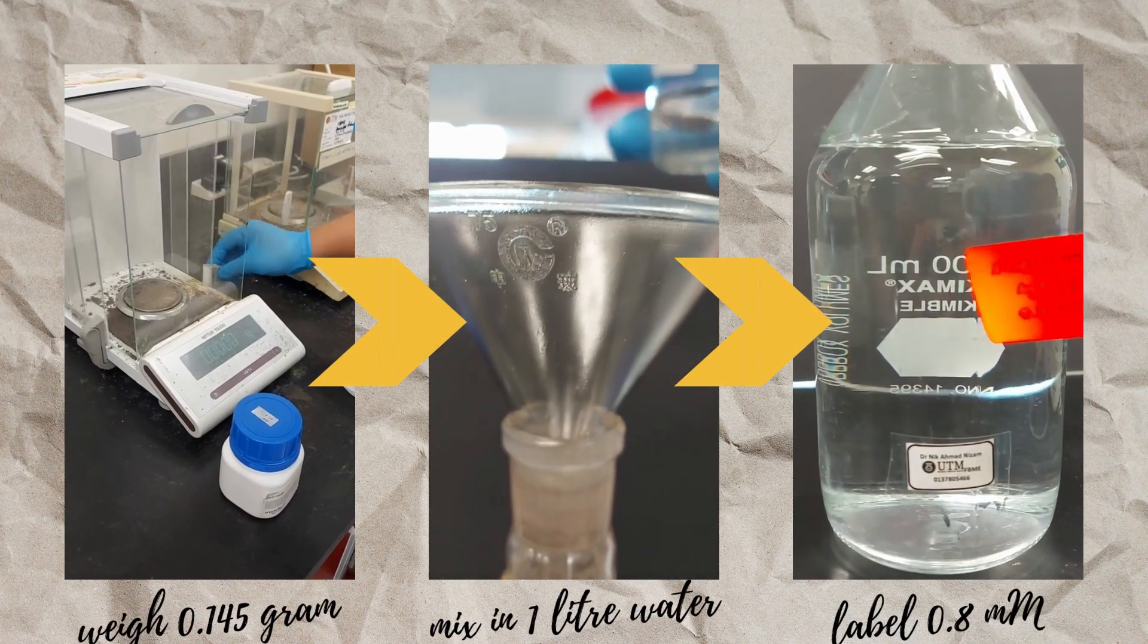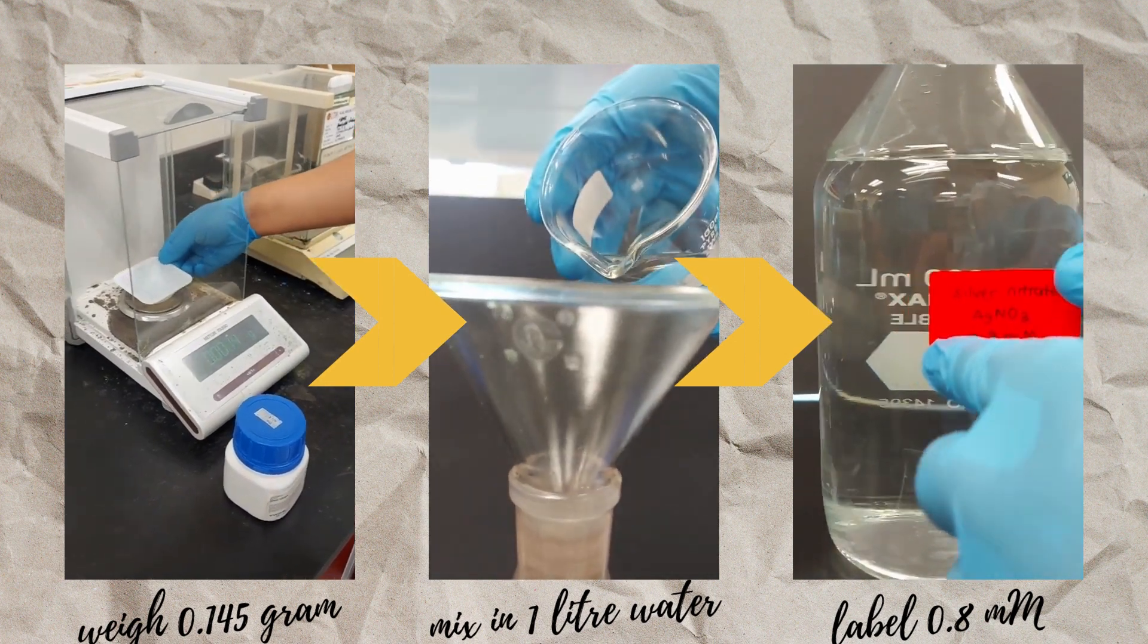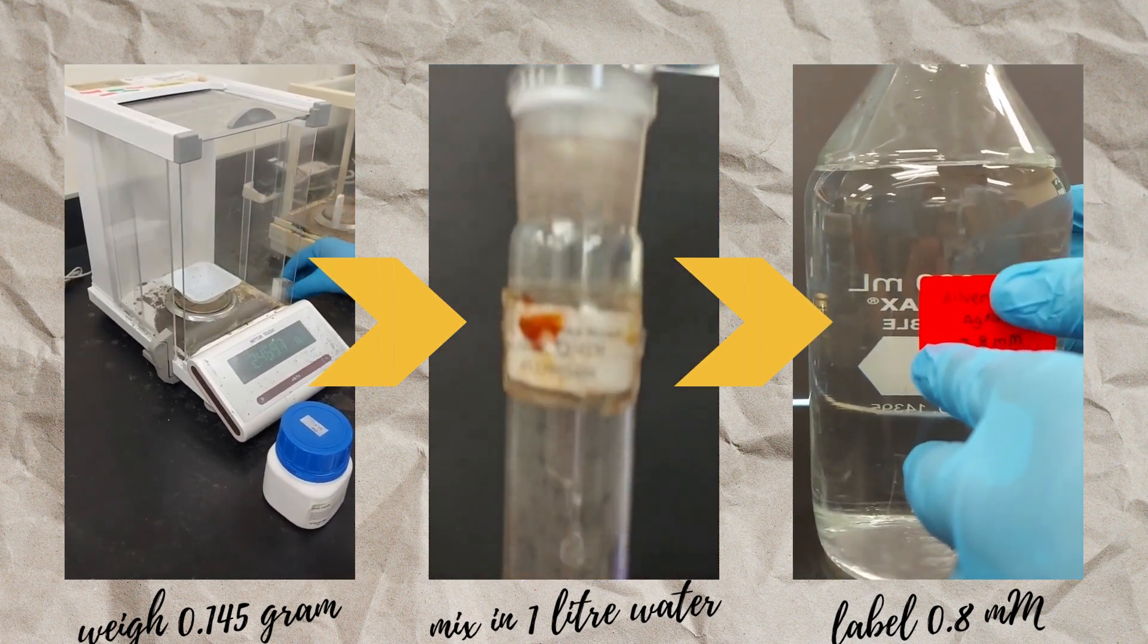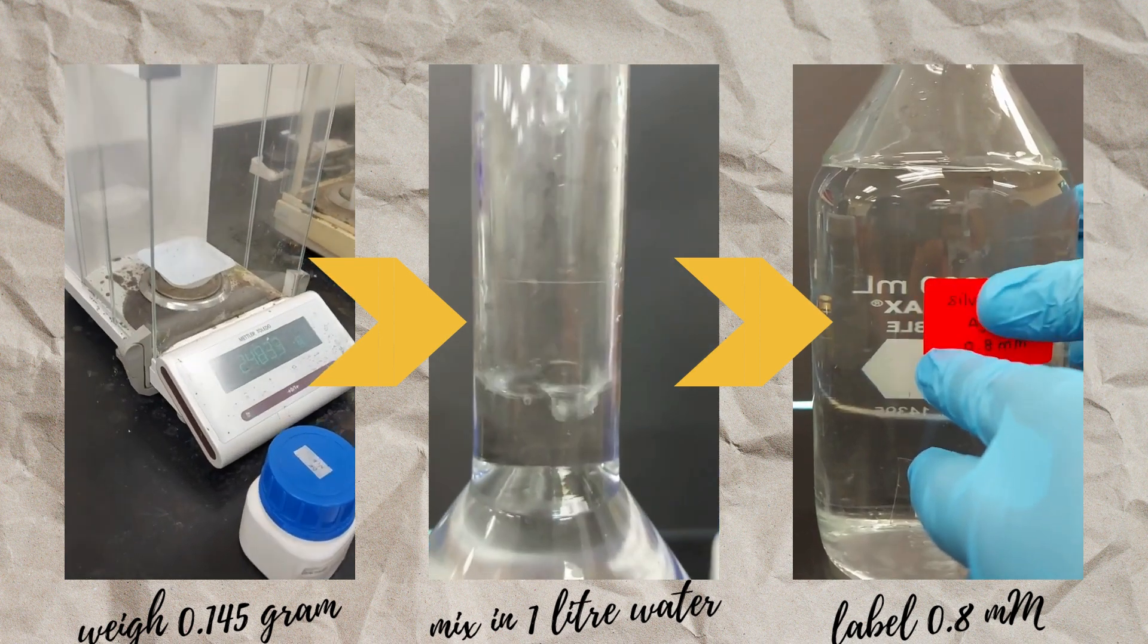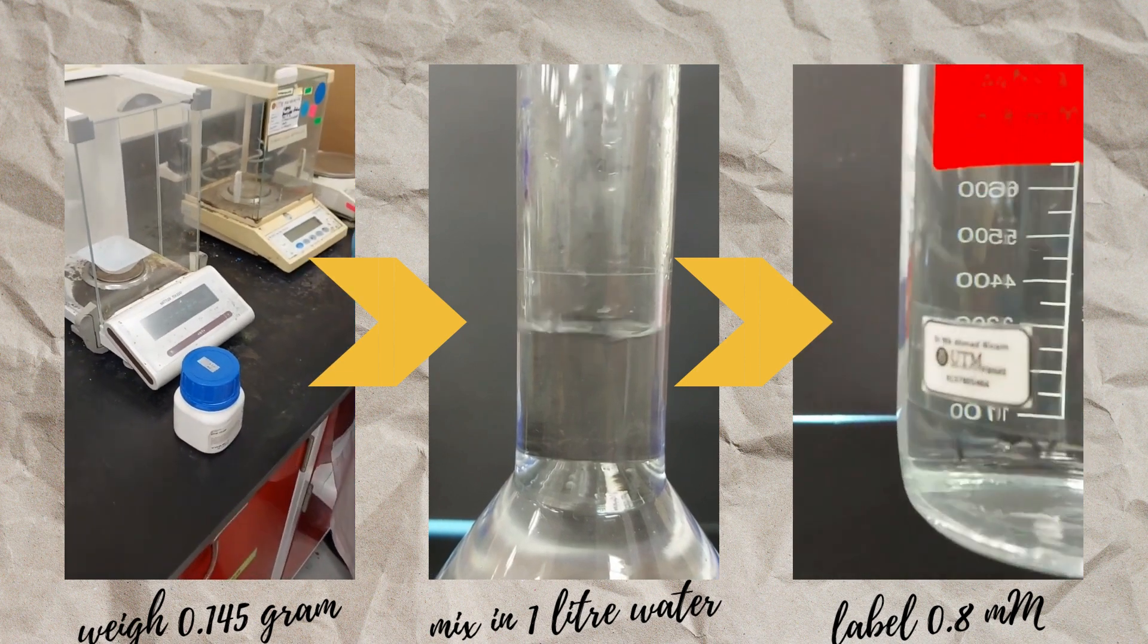Weigh 0.145 gram silver nitrate crystals and add into one liter water and mix them together. The concentration of this solution is equivalent to 0.8 millimolar. Later, don't forget to label the solution.